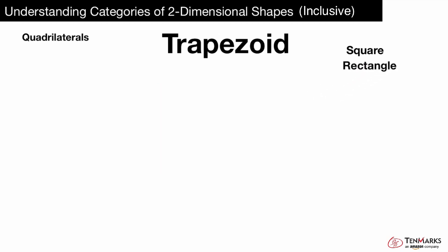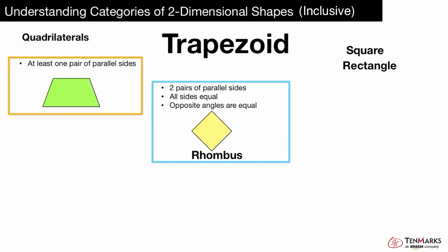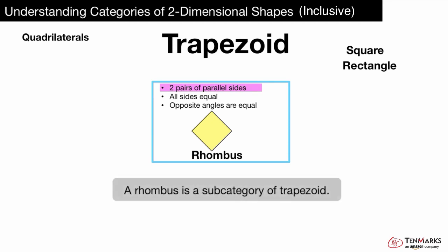Let's look at a rhombus. Is it a special type or subcategory of trapezoid? Remember, a trapezoid, by definition, has at least one pair of parallel sides. Does a rhombus have at least one pair of parallel sides? Yes, it actually has two pairs of parallel sides. So that means a rhombus is a special type or subcategory of trapezoid.